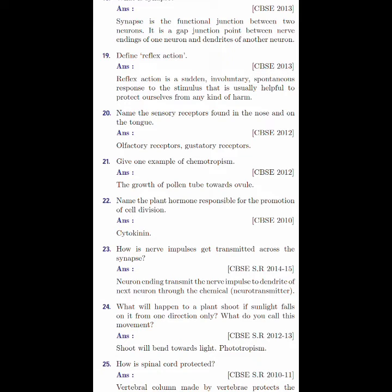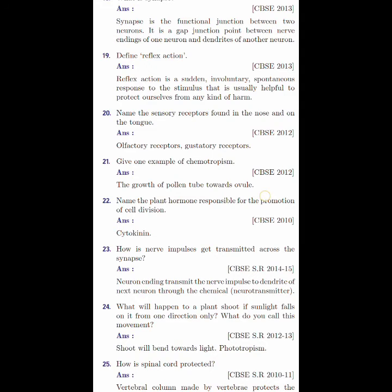Name the plant hormone responsible for promotion of cell division. That is cytokinin. How are nerve impulses transmitted across the synapse? It is neuron ending that transmits the nerve impulse to dendrite of next neuron through the chemical that is called neurotransmitter. In the year 2014 as well as 2015 they have asked this question.